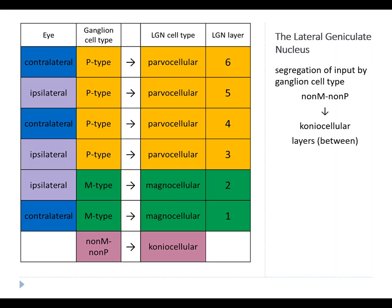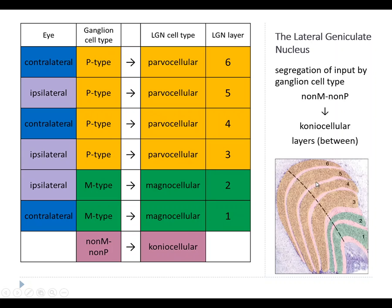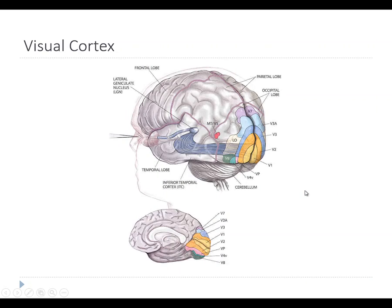There's actually a third type of retinal ganglion cell — smaller and less numerous — creatively called non-M non-P retinal ganglion cells. Their axons also go to the LGN but project to the koniocellular layers, which are the thin layers in between the numbered layers. In the image, these appear as the pinkish layers between the main numbered ones. They receive input from the non-M non-P retinal ganglion cells. Next up, we'll talk about the visual cortex.